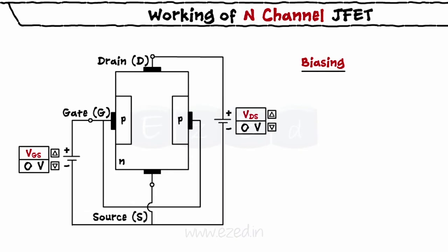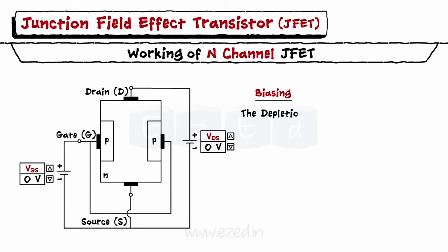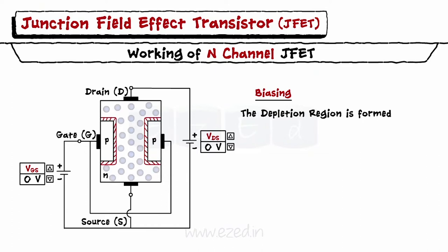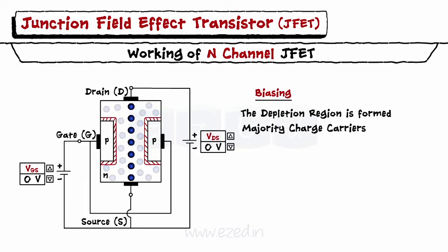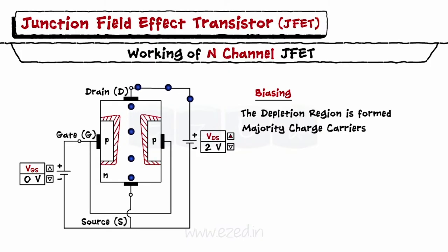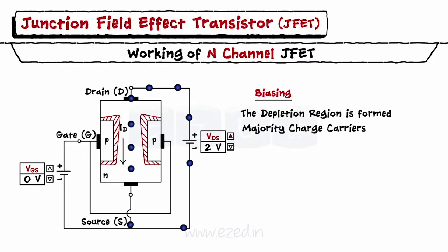As no voltage is applied, the depletion region is formed across the two PN junctions. Being of N type, the drain to source channel contains electrons as majority charge carriers. Application of a small drain to source voltage makes these electrons flow from the source to the drain, as the positive voltage at the drain attracts them. Thus, the drain current flows through the JFET from the drain to the source.